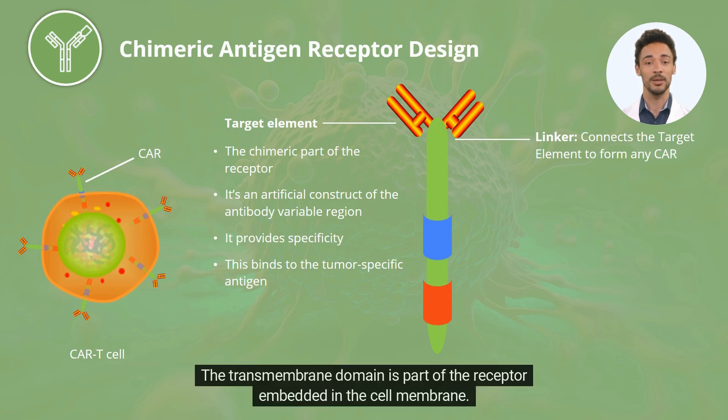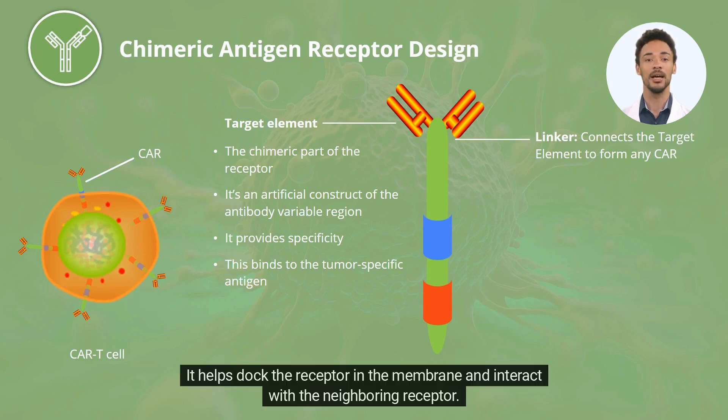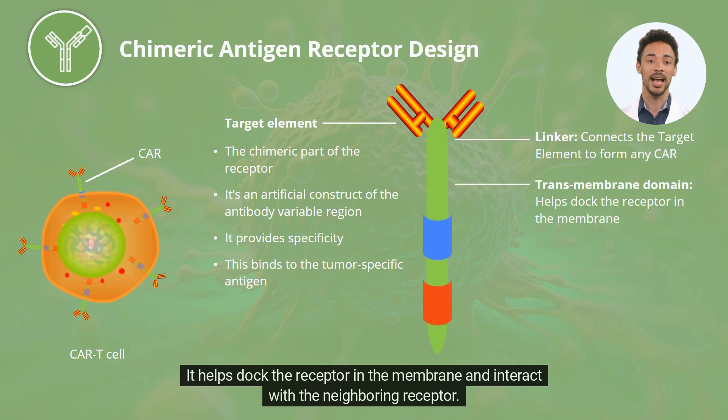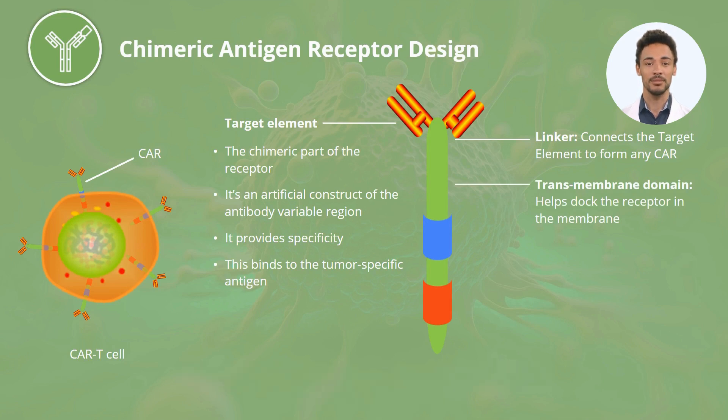The transmembrane domain is the part of the receptor embedded in the cell membrane. It helps dock the receptor in the membrane and interact with the neighboring receptor.